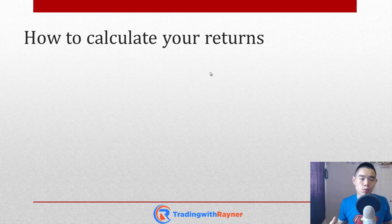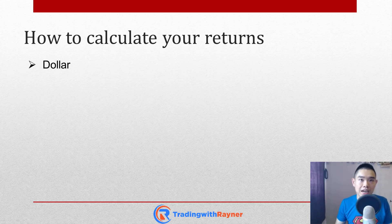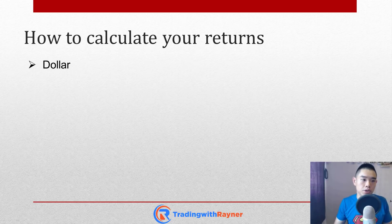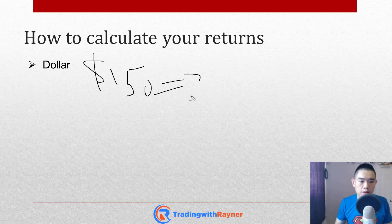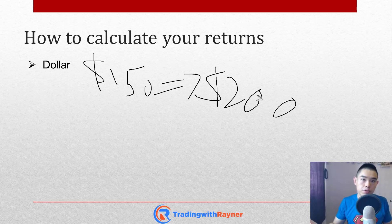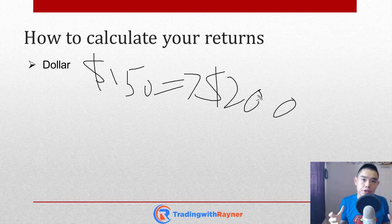Moving on, how do you actually calculate your stock trading returns? There are three ways. Number one is the dollar approach — calculate the difference between your selling price and buying price, and that difference is the profit you've made in dollars. For example, you buy at $150 and sell at $200, so your profit is $50 per share. If you buy 1,000 shares, that profit is $50,000 — just the profit per share multiplied by the number of shares you've bought.